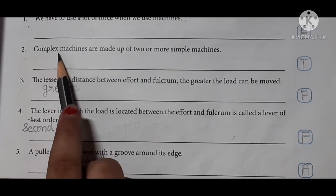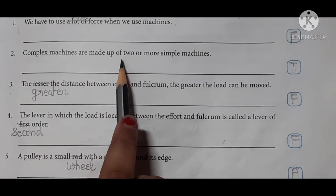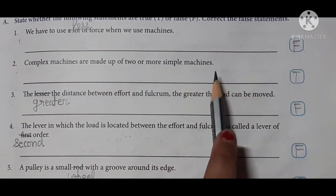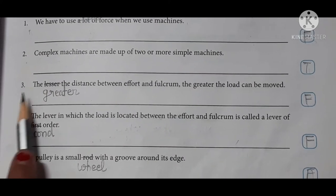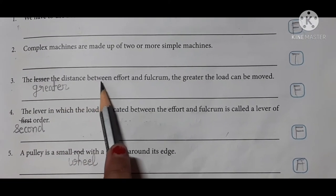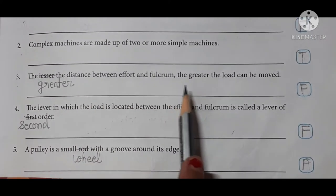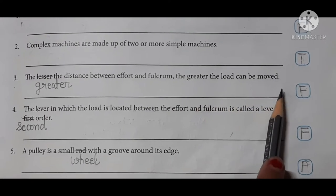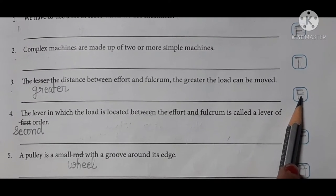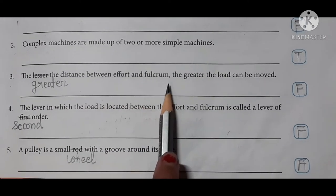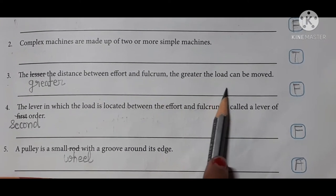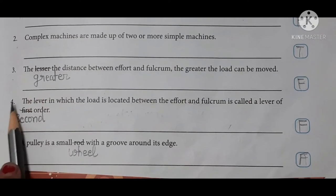Second, complex machines are made up of two or more simple machines. True statement. Third, the lesser the distance between effort and fulcrum, the greater the load can be moved. False statement. The greater distance between effort and fulcrum, the greater the load can be moved.